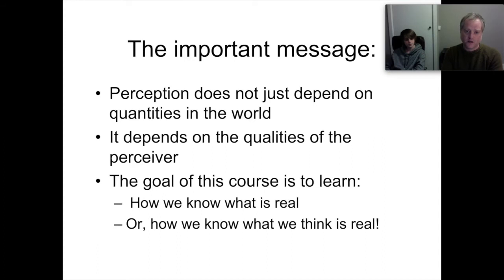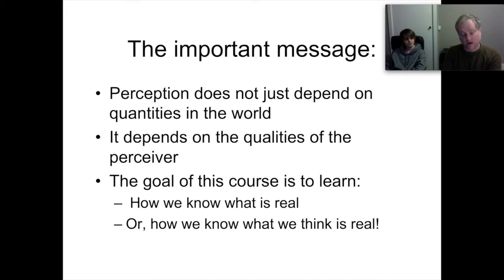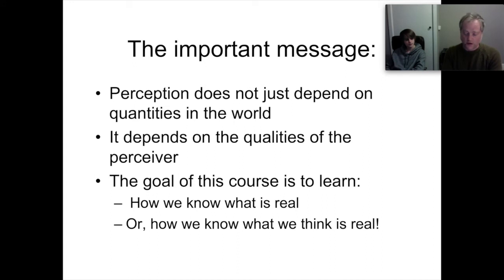Perception doesn't depend only on what's in the world — it also depends on you as the perceiver. It might be your experiences, or even low-level characteristics such as differences in your photoreceptors that change how you perceive color. Some of us have color deficiencies that determine how we perceive the world. Throughout this course, we're trying to figure out how we know what is real in the world and how we know what we think is real.